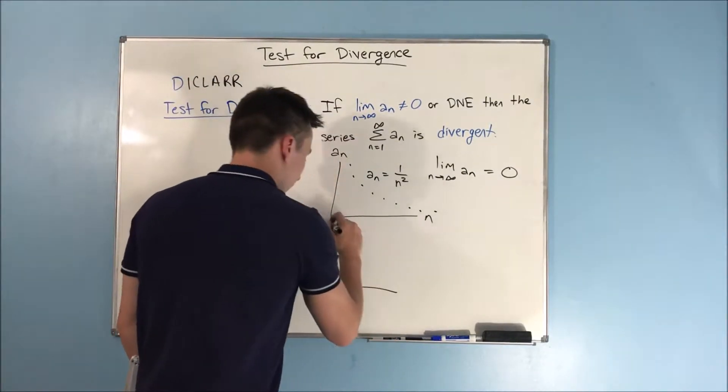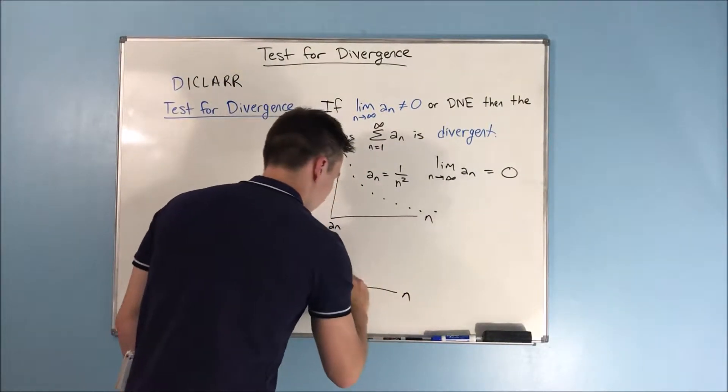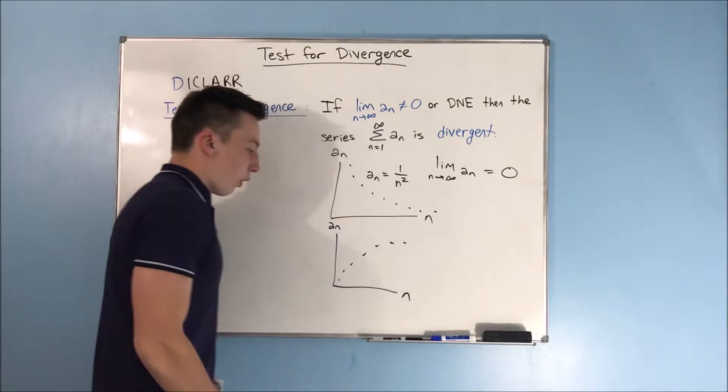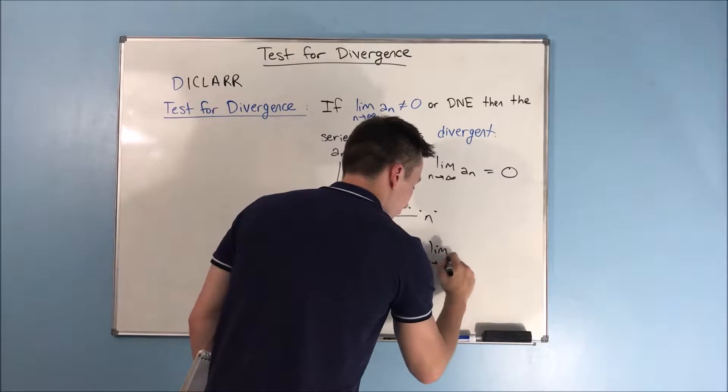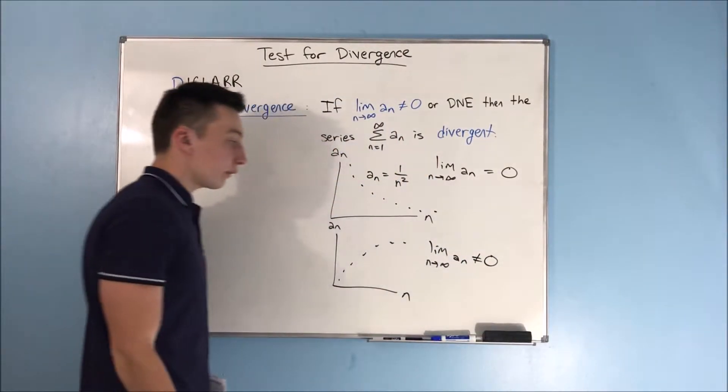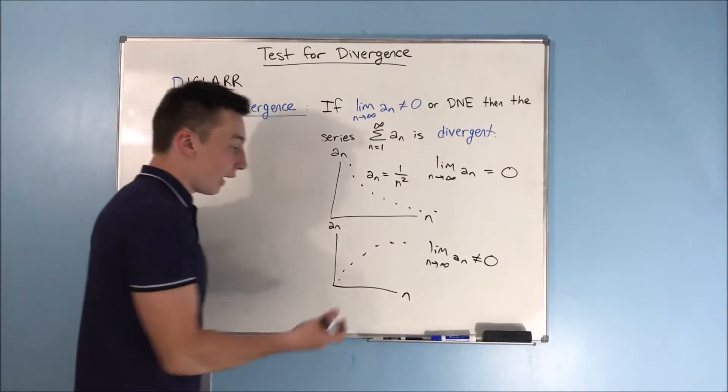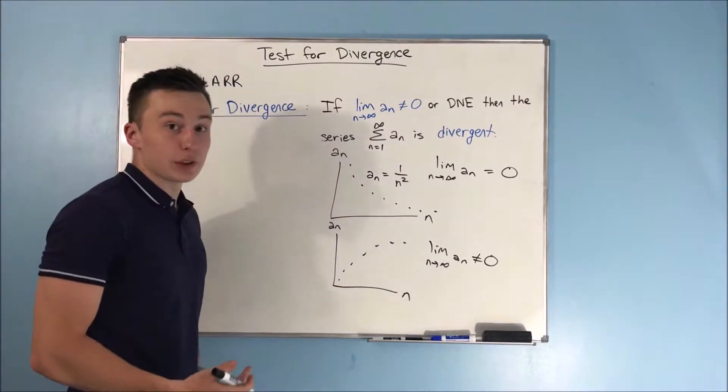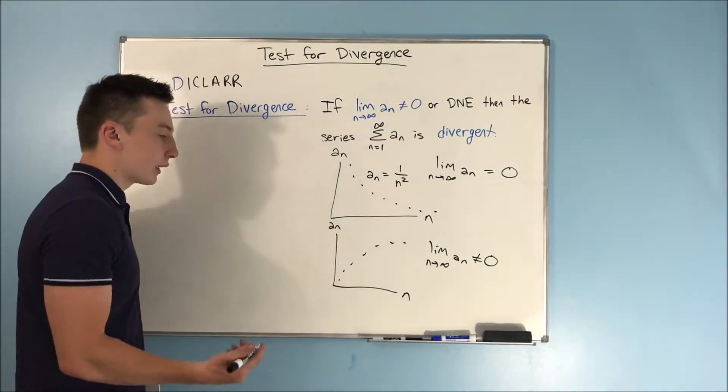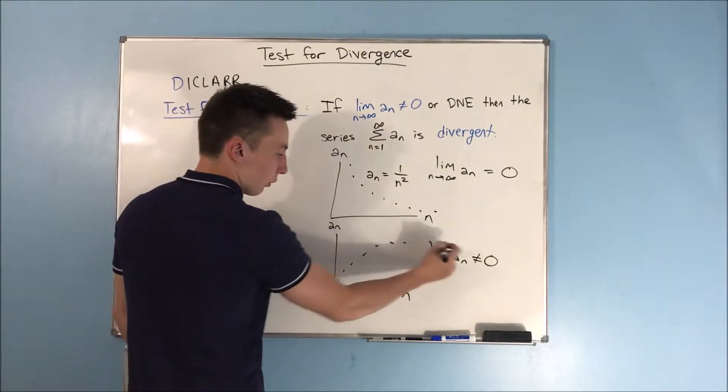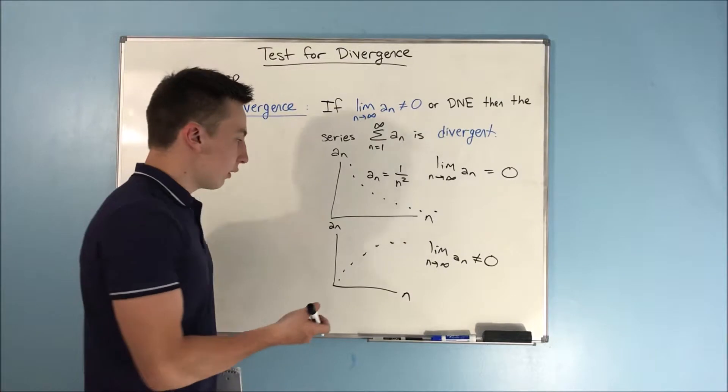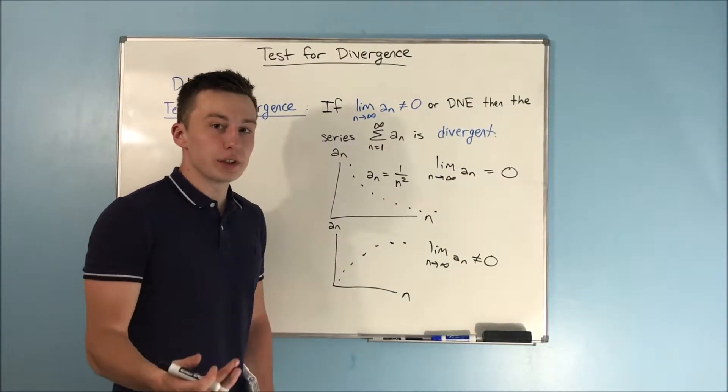However, if we had something like this, where the limit as n approaches infinity of a sub n does not equal zero, well, then we obviously know that this is going to be divergent. That's why the test for divergence works. And you could say, well, what if there's an asymptote right here? Well, that doesn't matter because then maybe the sequence converges, but the series...